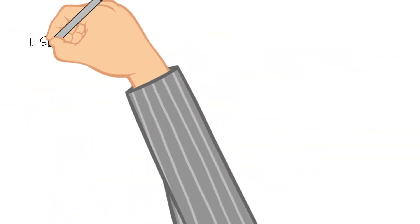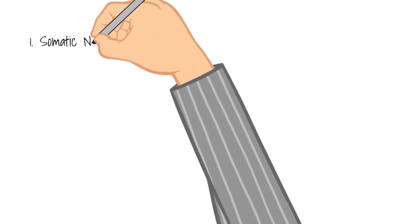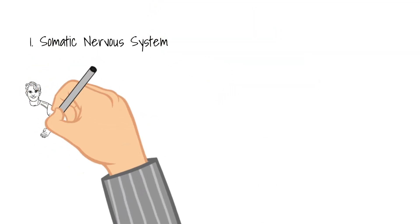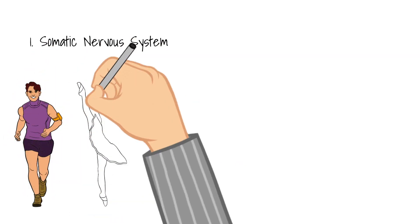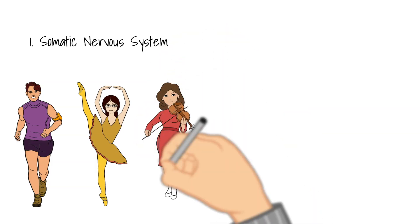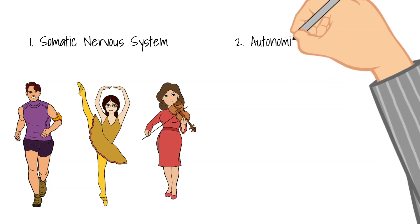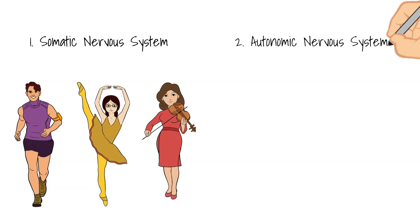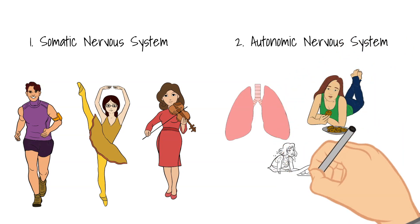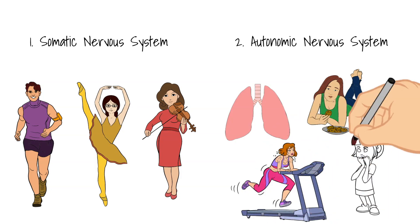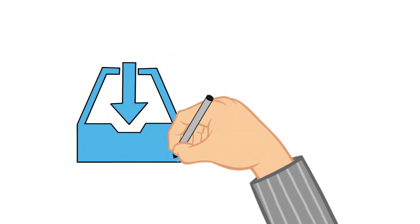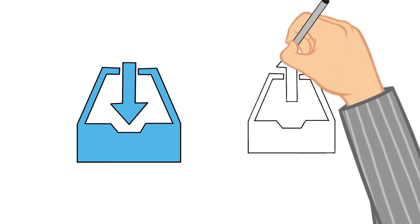Let's break down the nerve part of our nervous system into two parts. The first part is the somatic nervous system nerves, and they control the actions we do by choice — like running, dancing, or even playing the violin. The autonomic nervous system nerves control the processes that happen automatically — those involuntary processes like breathing, digestion, sweating, and even shivering. Remember the different parts of the brain that send these messages — these nervous systems deliver those messages to the parts of the body.